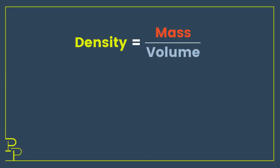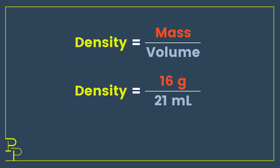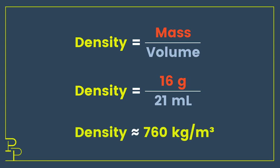Taking my 16 grams of carbon dioxide divided by the 21 milliliters gives a density of 760 kilograms per cubic meter. That means no matter what I do to this cartridge — as long as I don't pierce it — the contents inside will always have a density of 760 kg/m³.